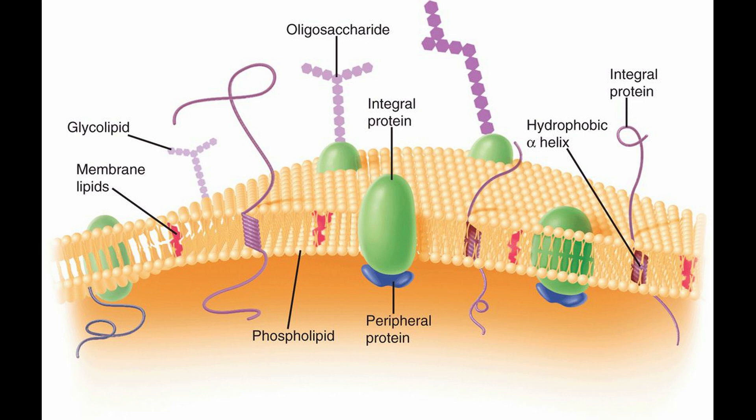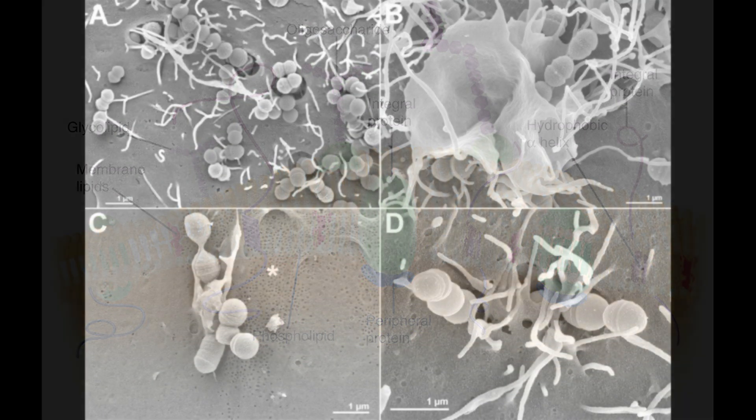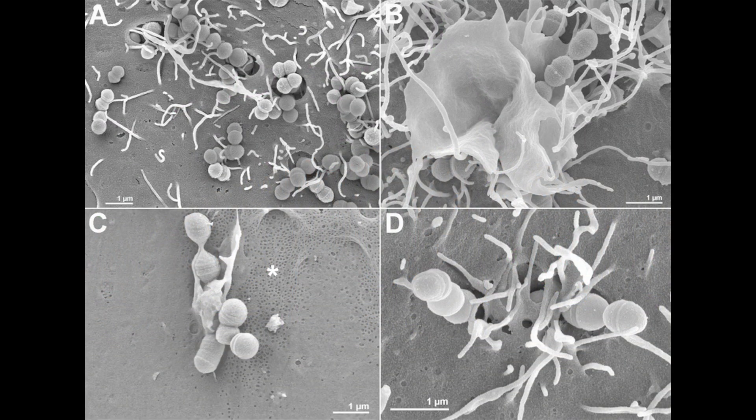The bacteria also uses oligosaccharide enzymes to break down the cell membrane of host cells when ready for invasion or lysis. In this way, the bacteria can actually form large invaginations in the cell, making it easy to invade.